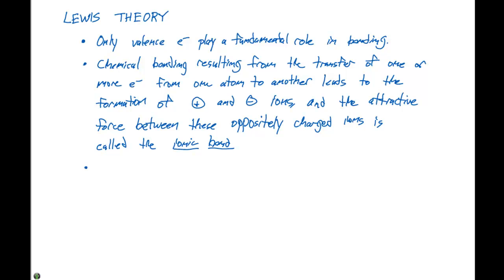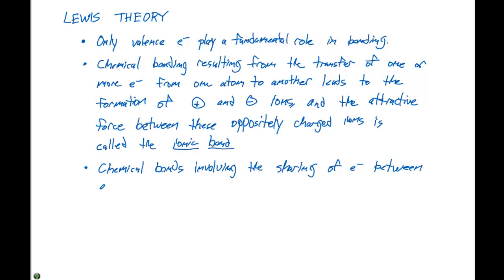We can also say that chemical bonds involving the sharing of electrons between atoms is called a covalent bond. So an ionic bond involves the transfer of electrons, whereas a covalent bond is the sharing of electrons.